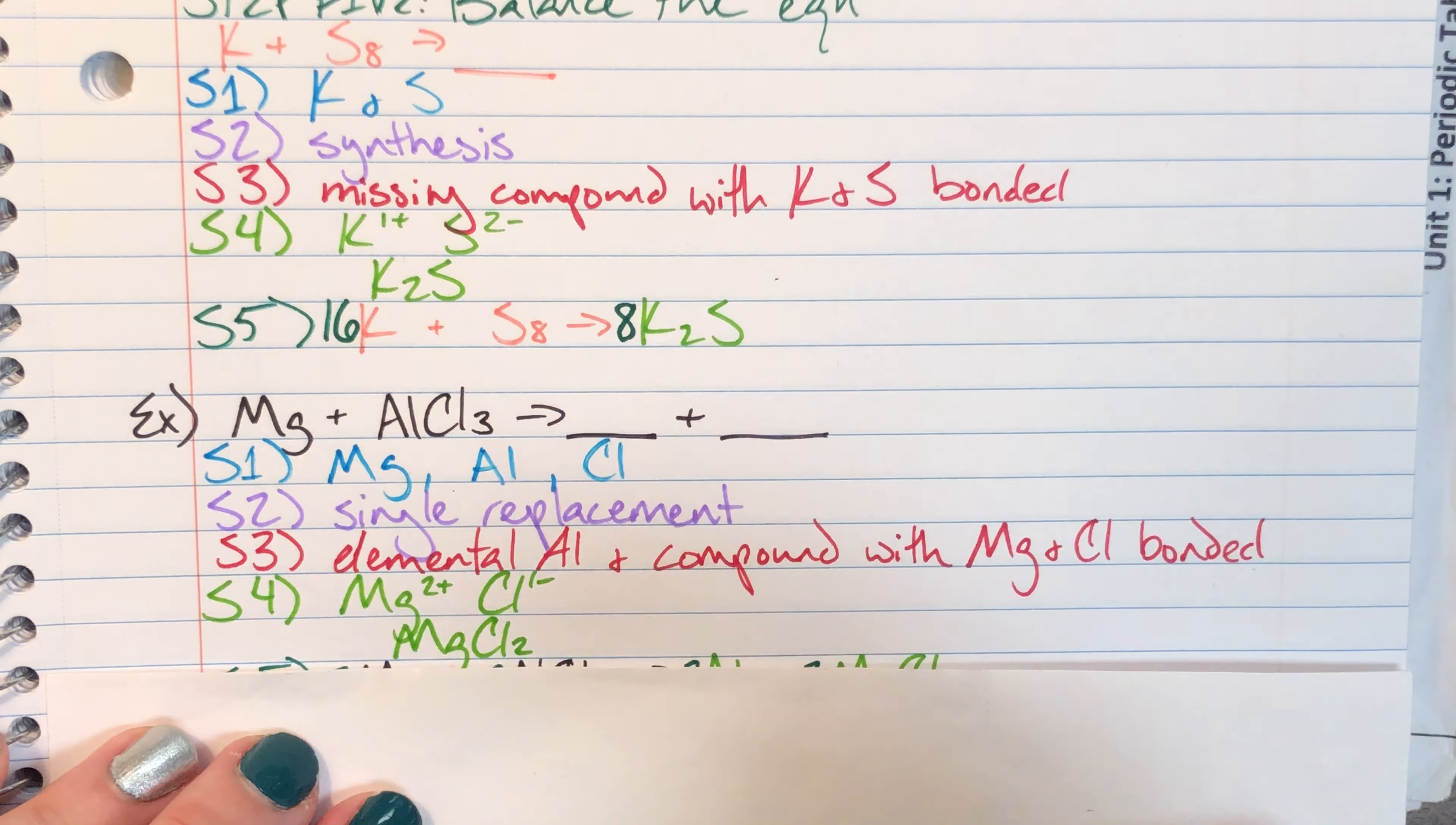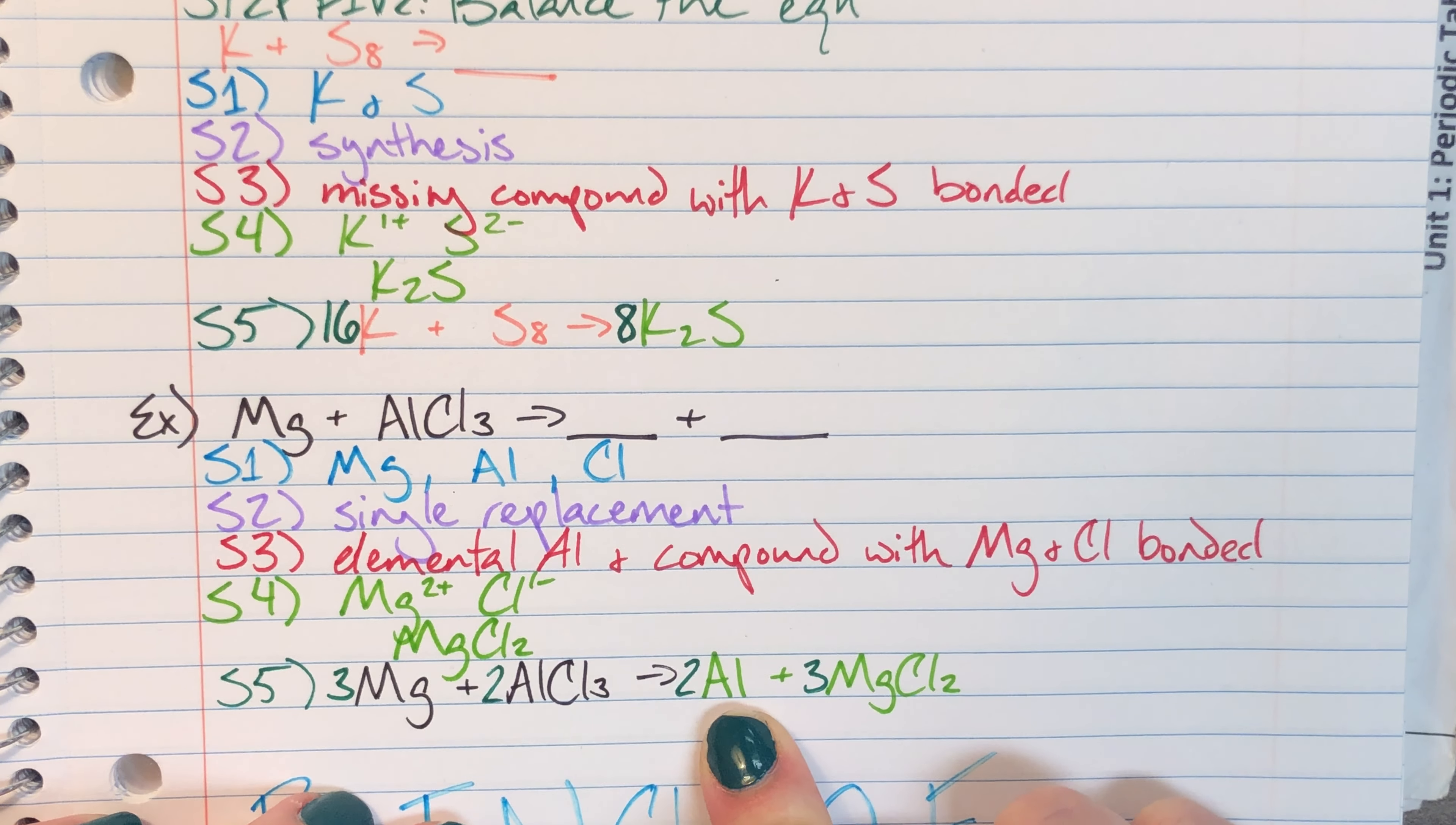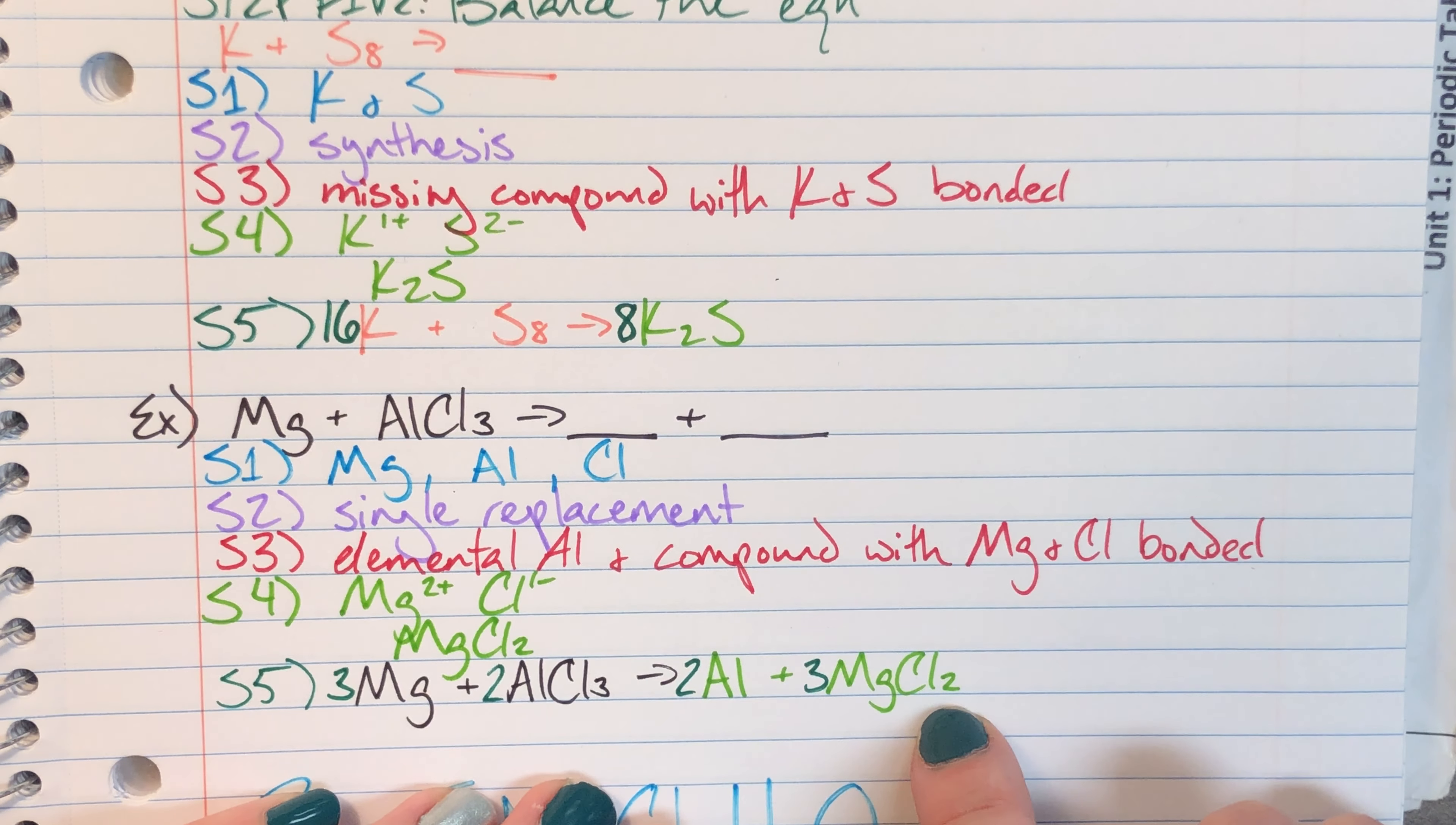And then I can go ahead and add it in to my final equation and balance it. So what I've done here is I have added in that aluminum metal which, again, remember I told you we didn't need to worry about charges or anything because I knew it was going to be single and therefore not have any charge or anybody else with it. And then I just went ahead and I added that magnesium chloride.